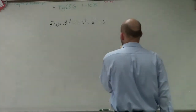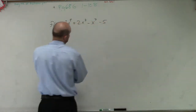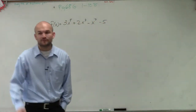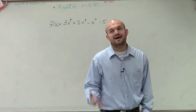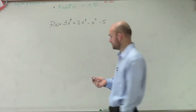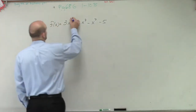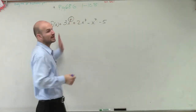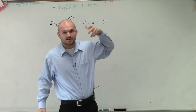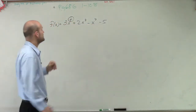We have f of x equals 3x to the fifth plus 2x to the fourth minus x squared minus 5. They're asking for the end behavior. We have to remember a couple of things when looking at end behavior. There are going to be two things we look for: we're going to look at the degree — as long as this is in descending order with the largest exponent first — and then we look at the degree.